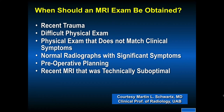When should an MRI scan be obtained? Recent trauma, difficult physical exam, physical exam that doesn't match the clinical symptoms, normal radiographs with significant symptoms, and in preoperative planning. Unfortunately, all too often we see a recent MRI scan that was technically suboptimal. The treatment may be to make the diagnosis and do rehab, but sometimes we do have to repeat the MRI either at the facility where it was done initially with more instructions, or getting it approved for a scan in a better scanner.